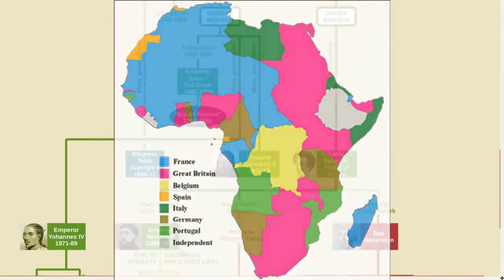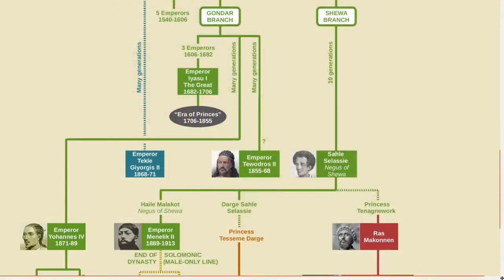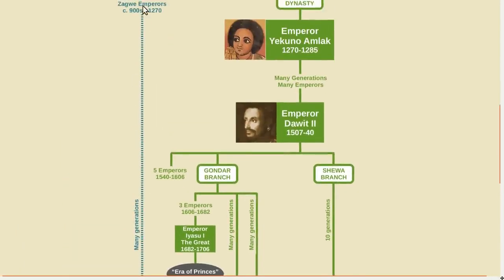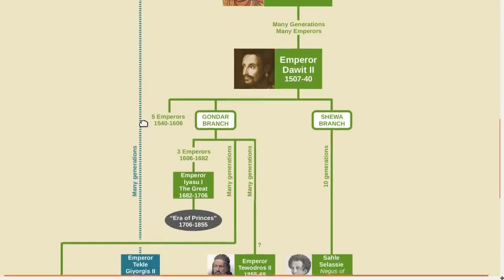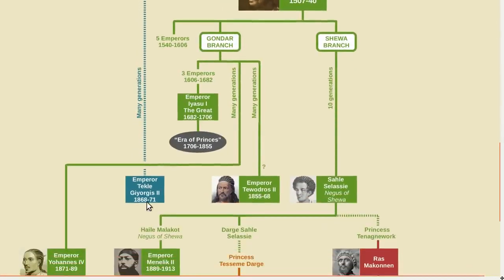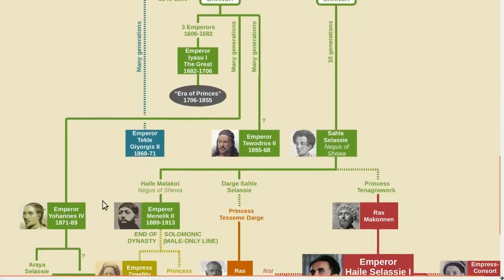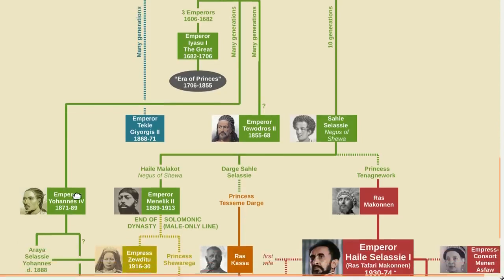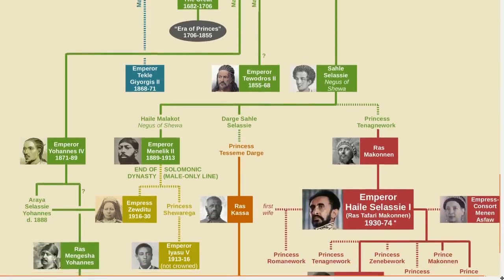In fact, Ethiopia was the only country in Africa that was not claimed by Europeans during this time period, known as the Scramble for Africa. After Tewodros, a descendant of the earlier Zagwe dynasty claimed the emperorship for a few years, but then he was defeated by Emperor Johannes IV, another descendant of the Gondar branch of the Solomonic dynasty. But his son, an appointed heir, died shortly before him.